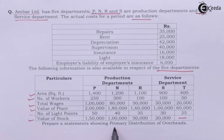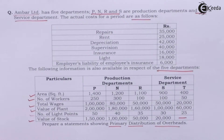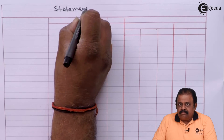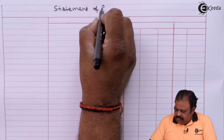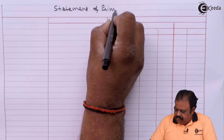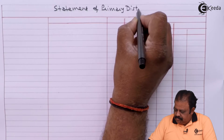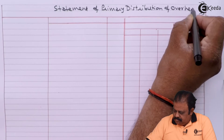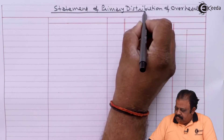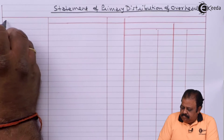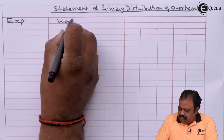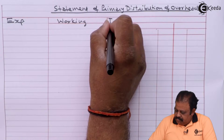We are required to prepare a statement showing primary distribution of overheads.